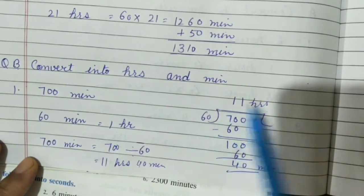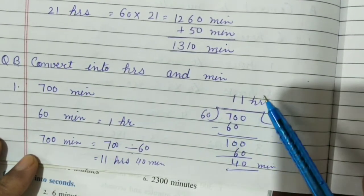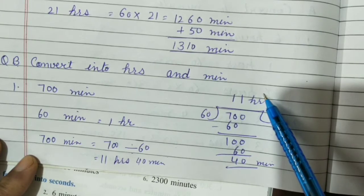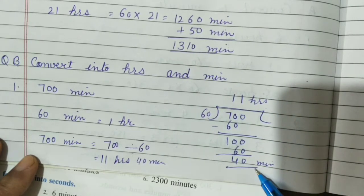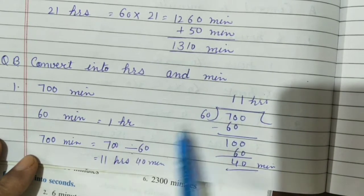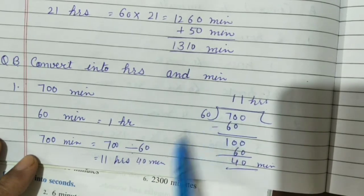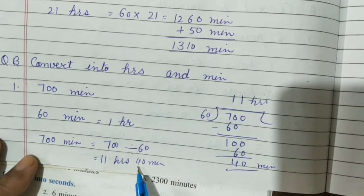When we divide 700 by 60, there is some remainder, some quotient. The quotient will be hours and remainder is minutes. So the answer is when we divide 700 by 60, the answer is 11 hours 40 minutes.